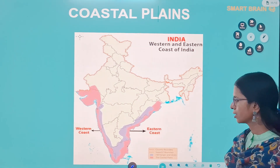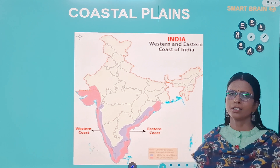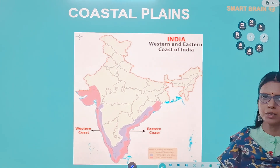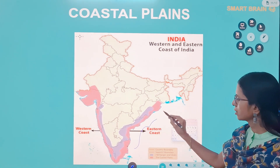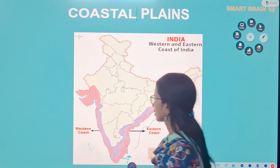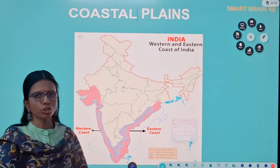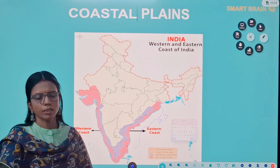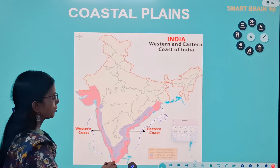The eastern coastal plains are located along the east coast of India, lying between the Eastern Ghats and the Bay of Bengal. The western coastal plains are located along the western coast of India, lying between the Western Ghats and the Arabian Sea.